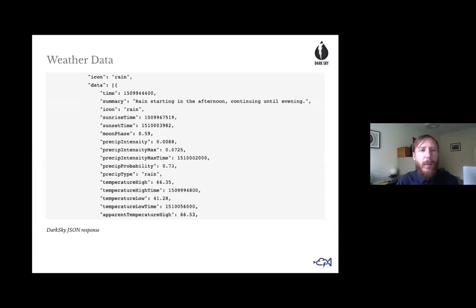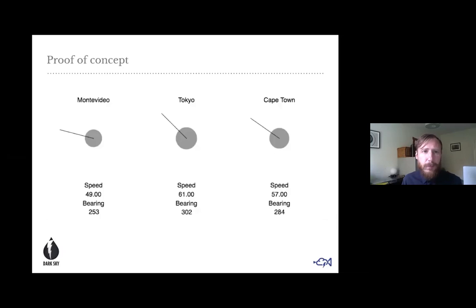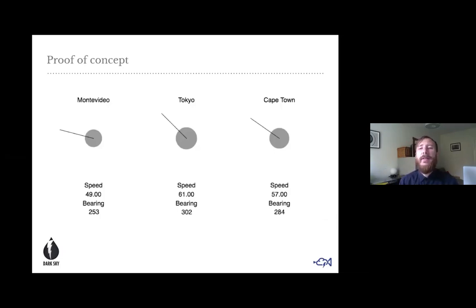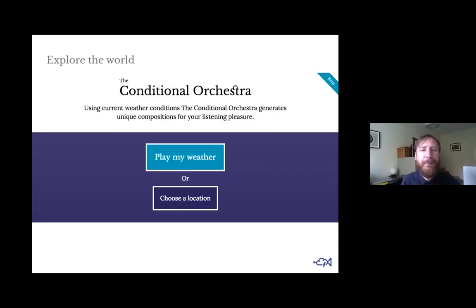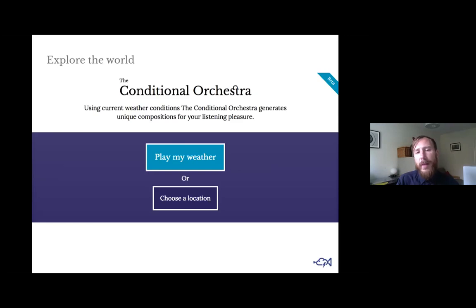Here's a quick sample of the JSON you get back — pretty much everything is either a number or a string, so there's a little bit of work to do in processing that data. I had essentially proved the concept, which I was really pleased with, but obviously it wasn't going to do anything that anyone particularly enjoyed — it was completely static with no call to action. So it was time to do some design, and that's when I came up with the idea of the Conditional Orchestra. The first call to action I decided to implement was 'Play my weather.'